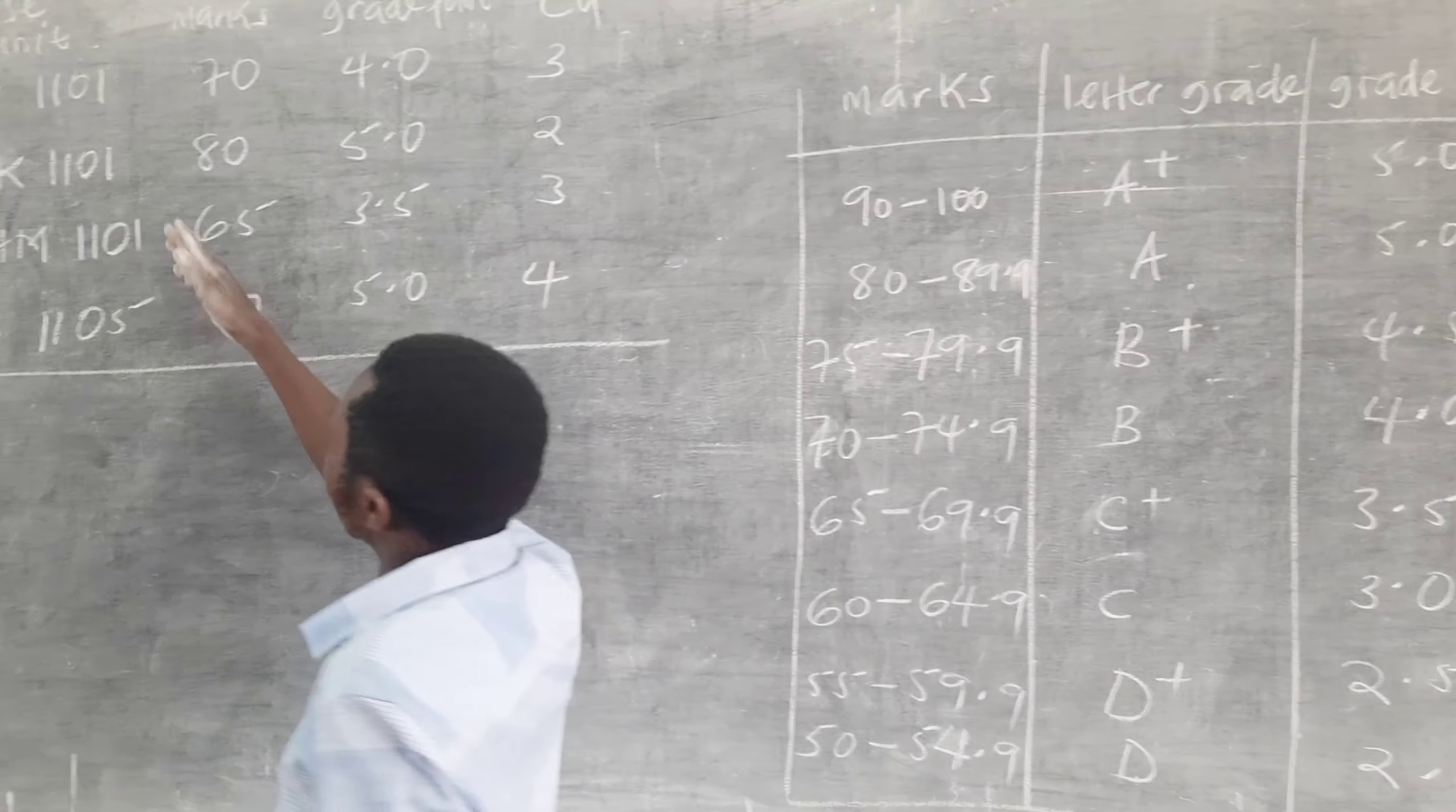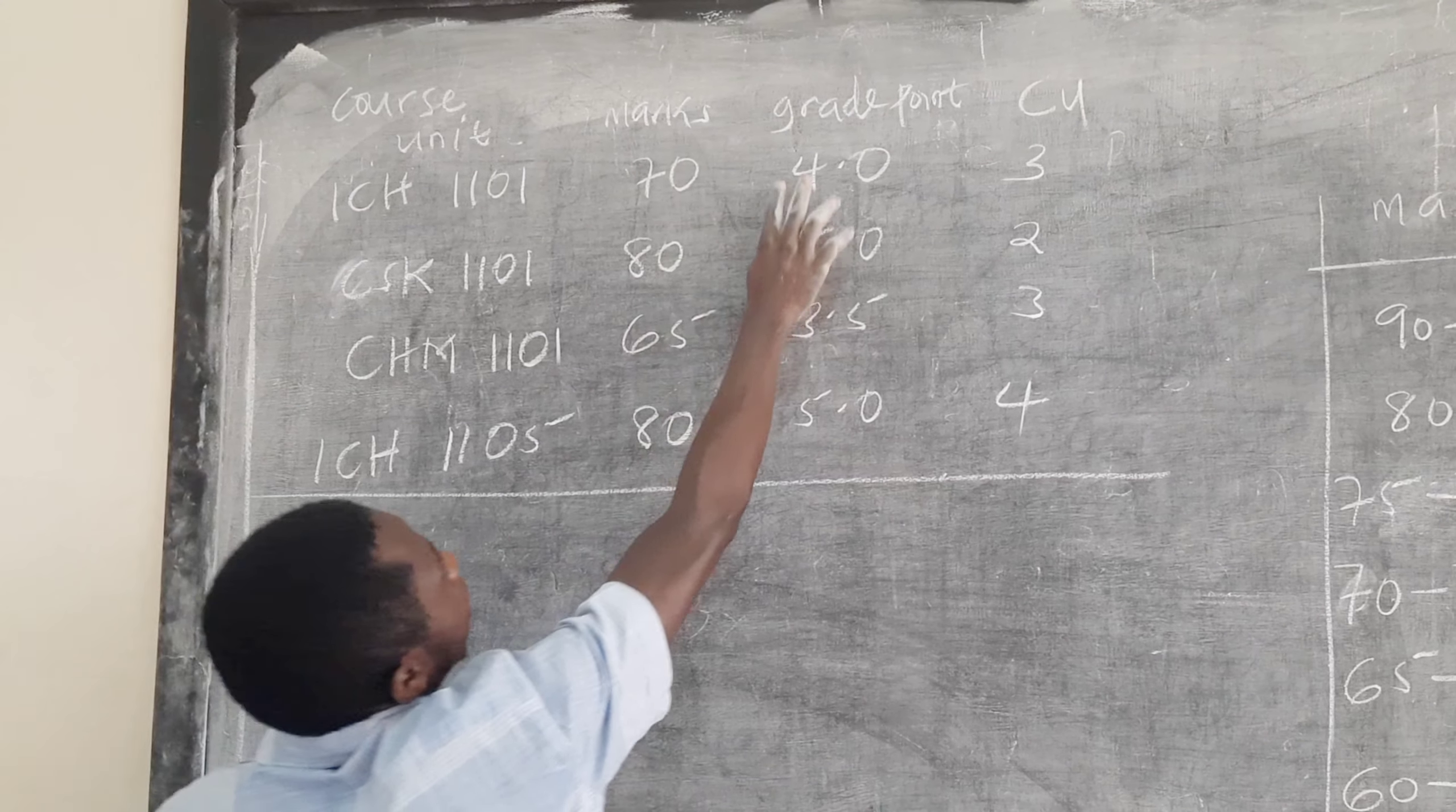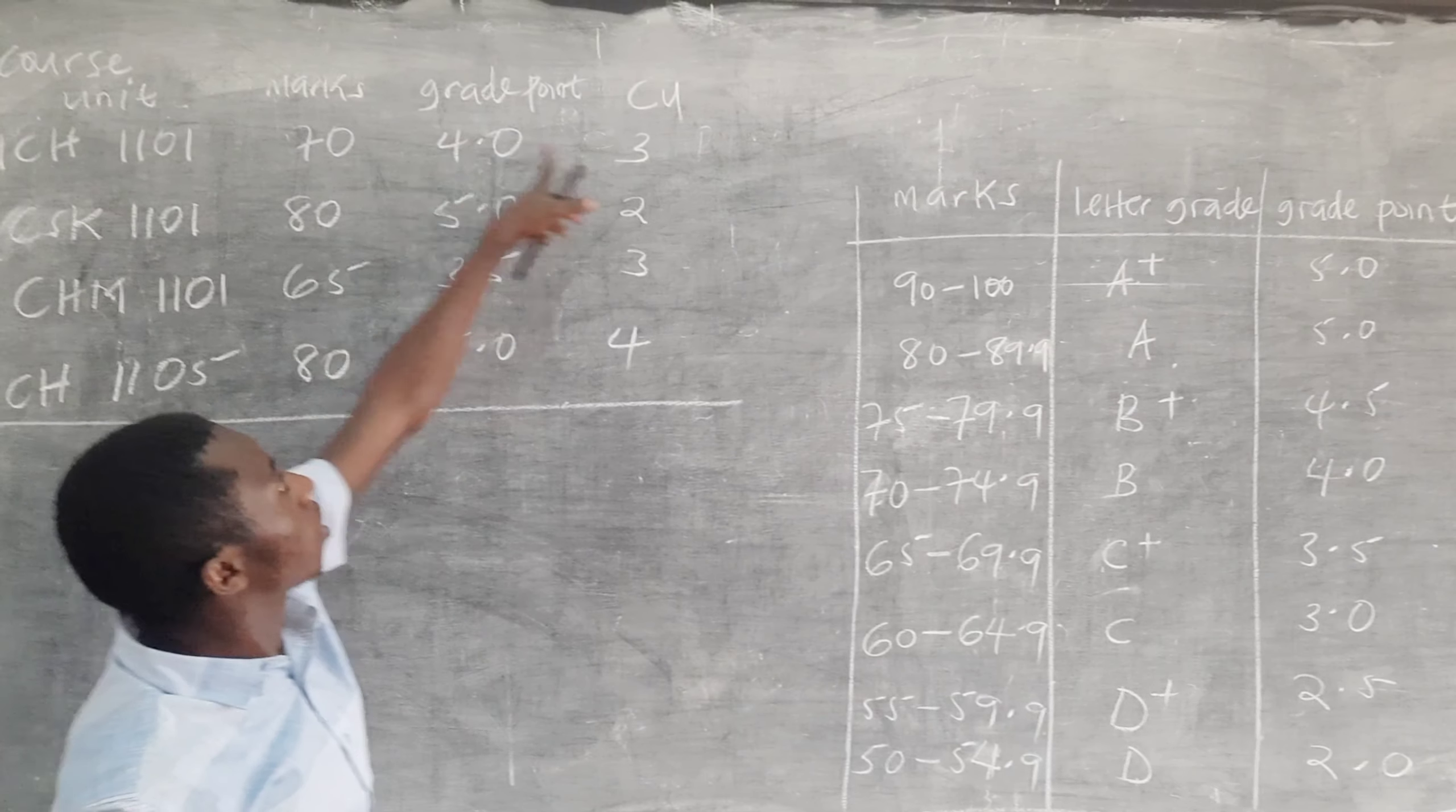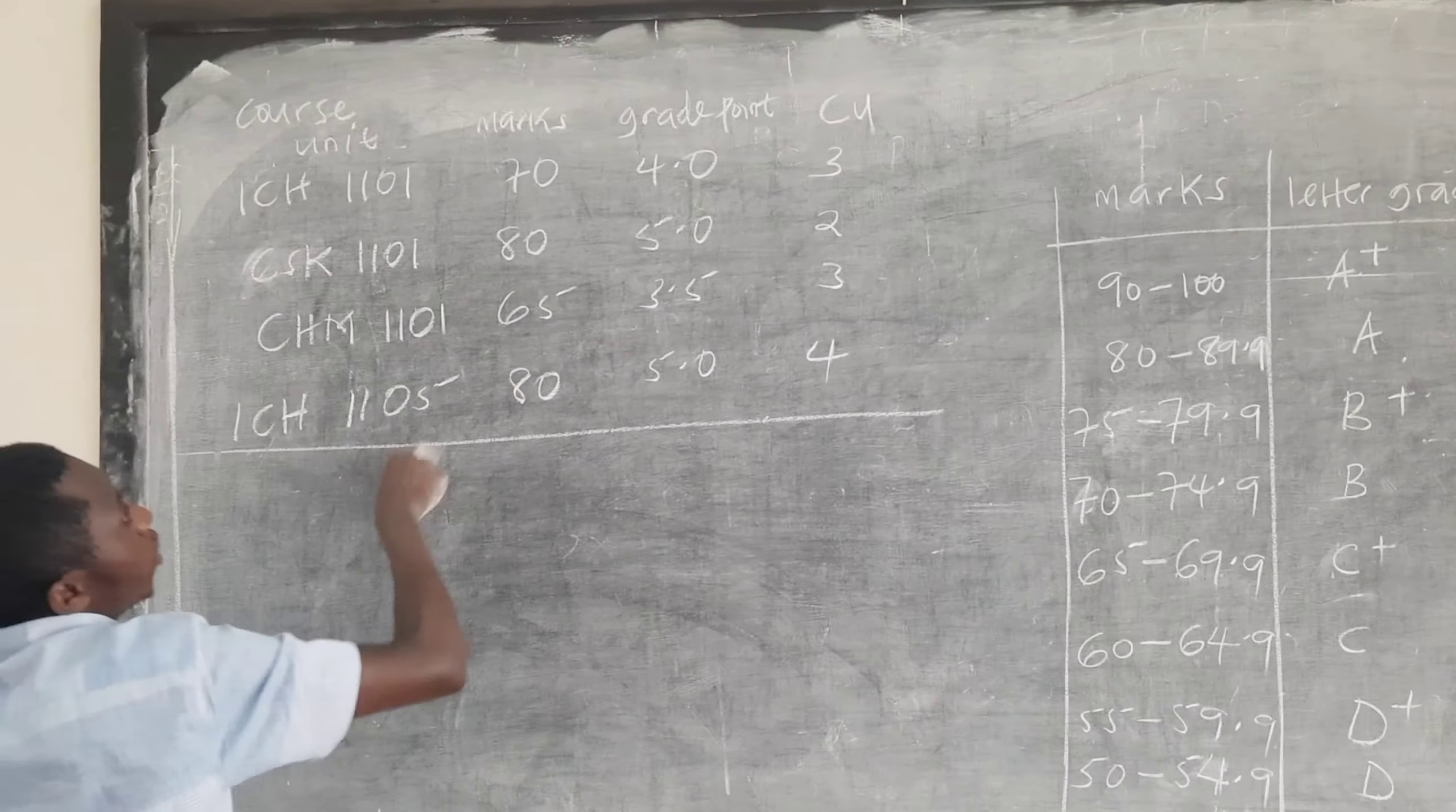Let's look at course units. Given in a semester, you have done these course units. You have gotten a 70. The grade point, you want to check which is 70, is a 4.0. And I told you that we shall be using the concept of a credit unit. This course unit has this many CUs. And you have more units with your marks, your grade points and the CUs.